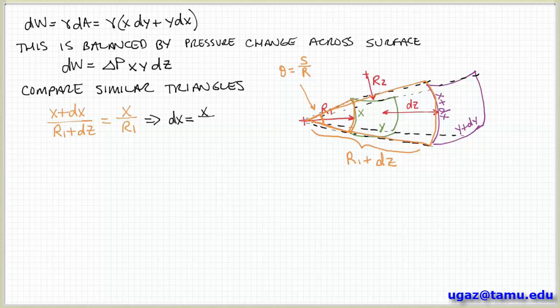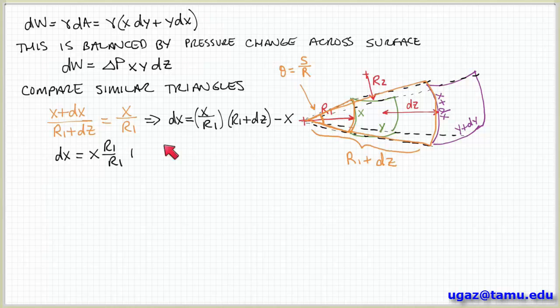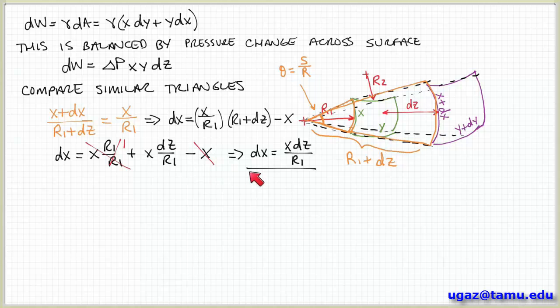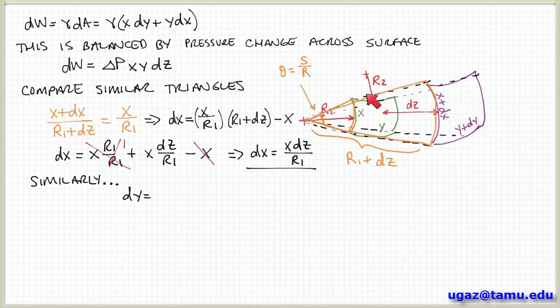So then with that I can solve for dx. So I get dx is x over r1 times r1 plus dz minus x. So now if I multiply through all these terms, I have x times r1 over r1 which is just 1 plus x times dz over r1 minus x. So the x's cancel and then I get finally an expression for dx in terms of dz. So I did that with the face here that corresponds to the radius of curvature r1. So you can imagine that similarly I can do the same analysis on the other faces that correspond to the radius of curvature r2, and I arrive at the corresponding relationship that expresses dy in terms of dz.